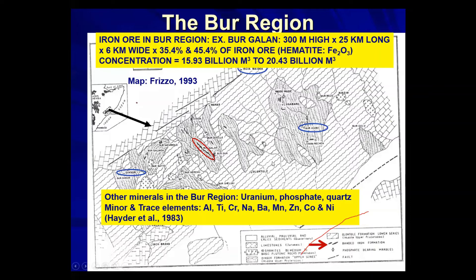Other minerals present in the region include uranium in the Aliogale zone, phosphate, and quartzite. Based on work published by Dr. Haider Abdullahi, my colleague at the University of Somalia, there are also minor and trace elements including aluminum, titanium, chromium, sodium, barium, manganese, zinc, cobalt, and nickel. These have been identified but may require further research to determine where concentrations could be higher.